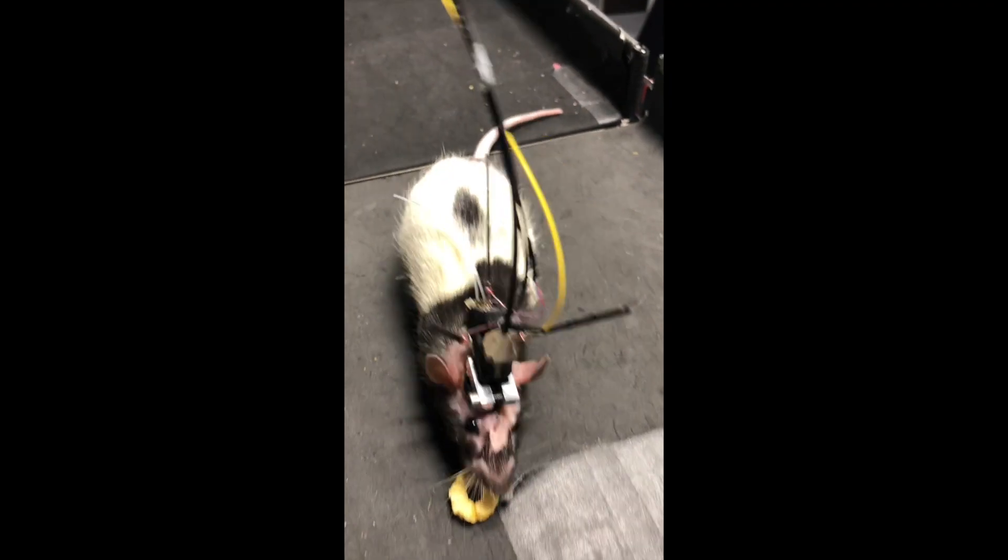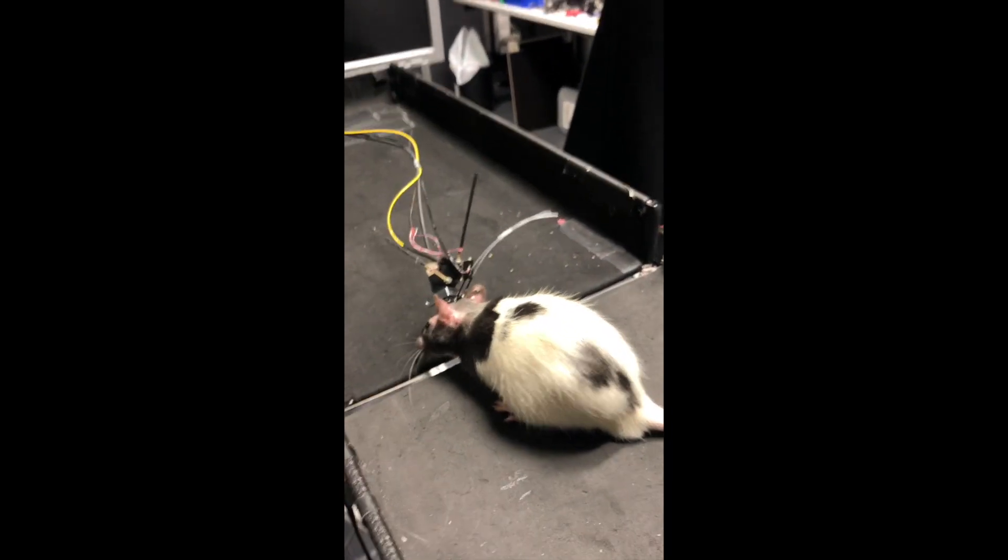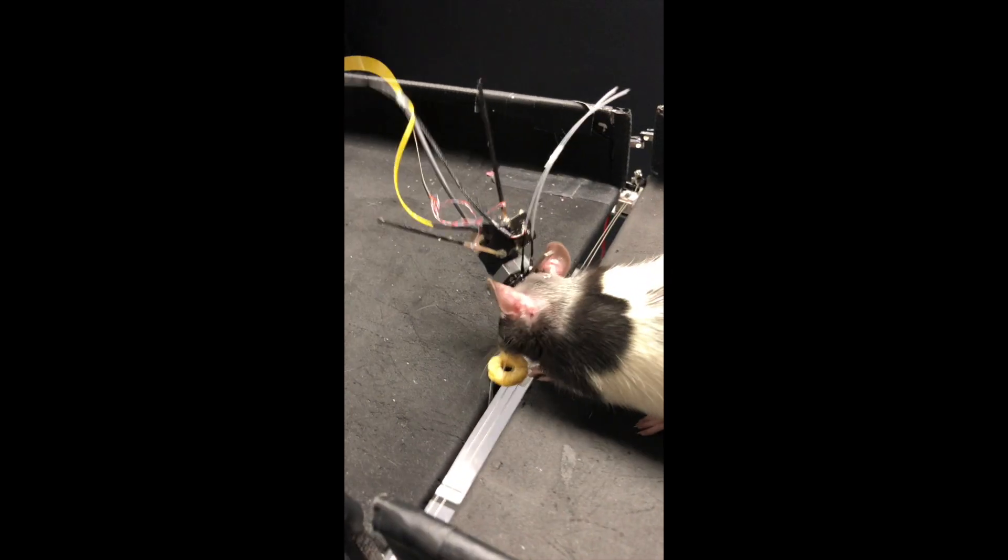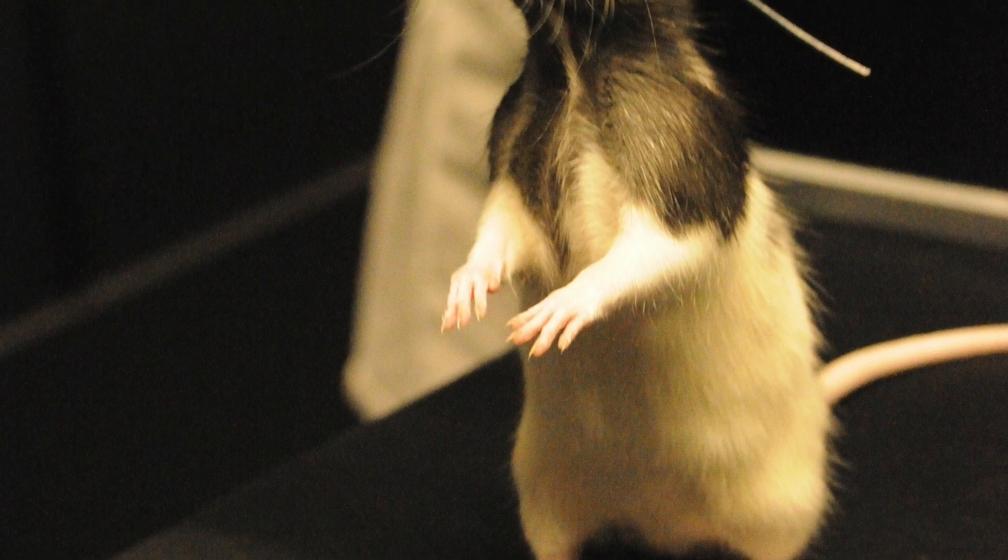In collaboration with Philip Russell's group at the Max Planck Institute for the Science of Light, the group of Jason Kerr now developed a small head-mounted three-photon microscope capable of imaging all cortical layers in a freely moving rat.